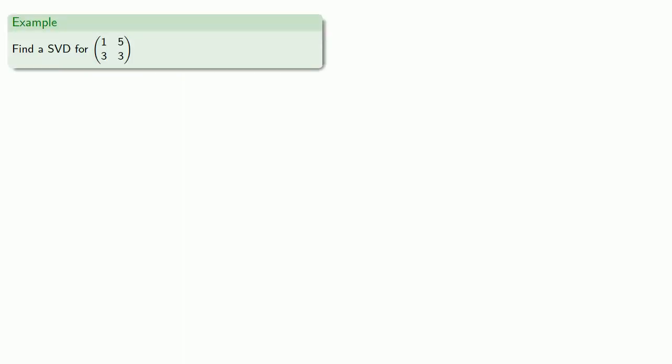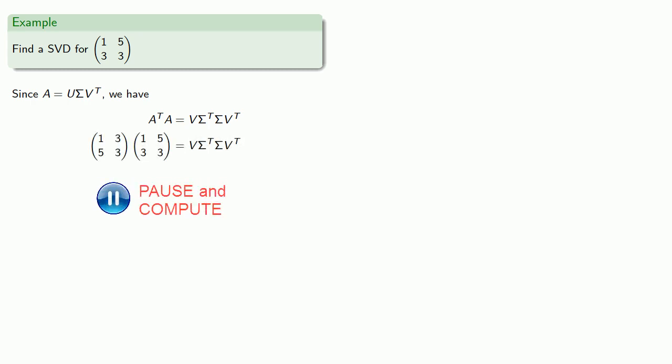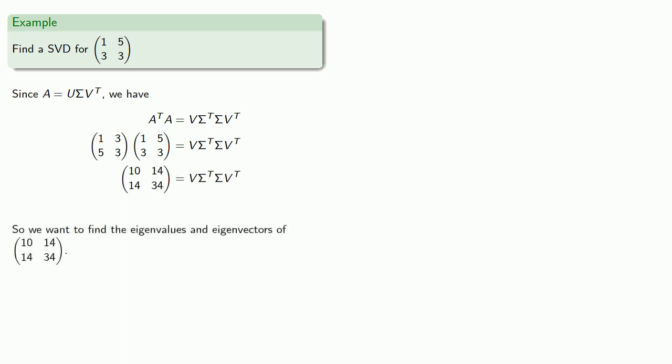So for example, let's try to find a singular value decomposition for this matrix. By assumption, this matrix A will be U sigma V transpose. So if we find A transpose A, that's going to be V sigma transpose sigma V transpose. Well, I know what A transpose A is.